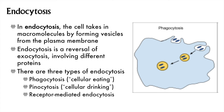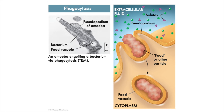Endocytosis can be divided into three categories: phagocytosis, pinocytosis, and receptor-mediated endocytosis. Phagocytosis means cell eating. In phagocytosis, a cell senses and engulfs a particle in a vacuole. This vacuole fuses with a lysosome to digest the particle, such as we see in an amoeba that is engulfing a bacterium that appears to be about as big as it is.